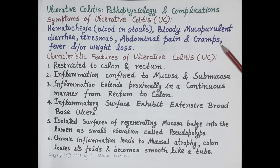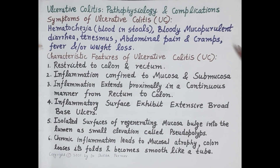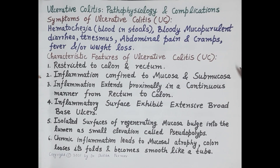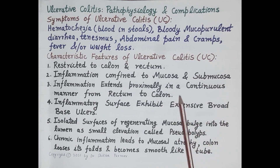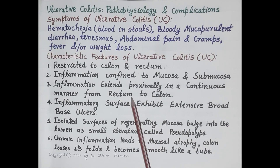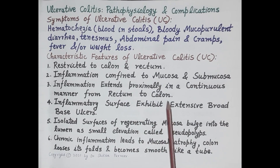Symptoms of ulcerative colitis include hematochezia (blood in the stools), bloody mucopurulent diarrhea, tenesmus (fecal urgency), abdominal pain and cramps, fever, and weight loss. Characteristic features include restriction to the colon and rectum, with inflammation confined to the mucosa and submucosa. The inflammation extends proximally in a continuous manner from the rectum, spreading throughout the wall of the colon over time.